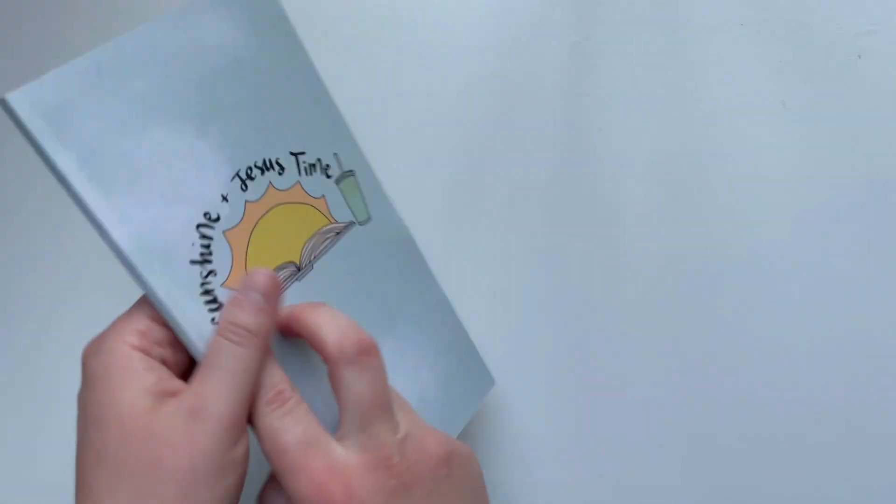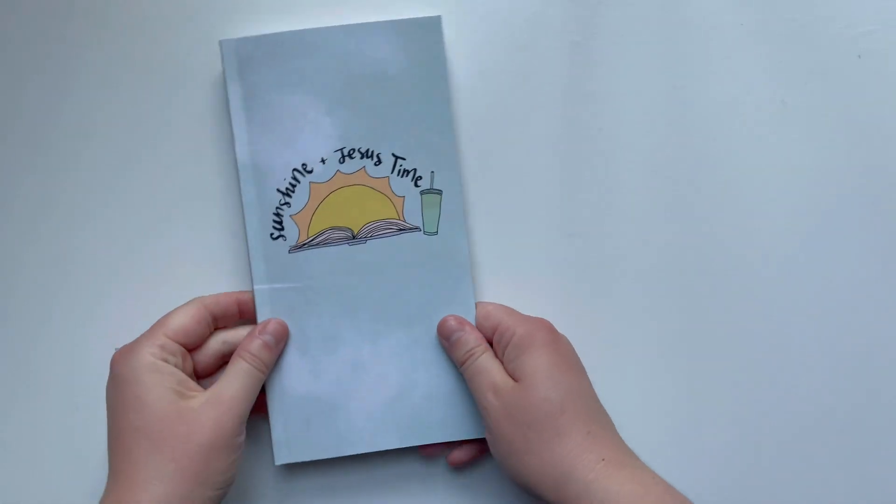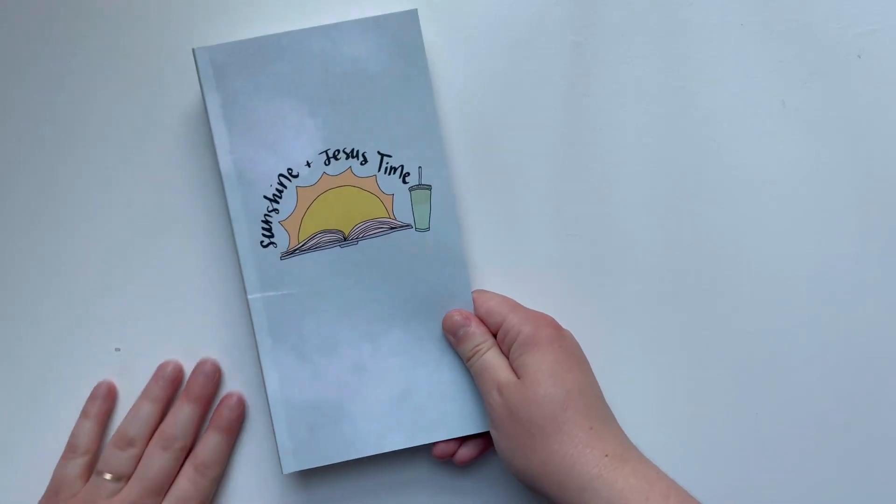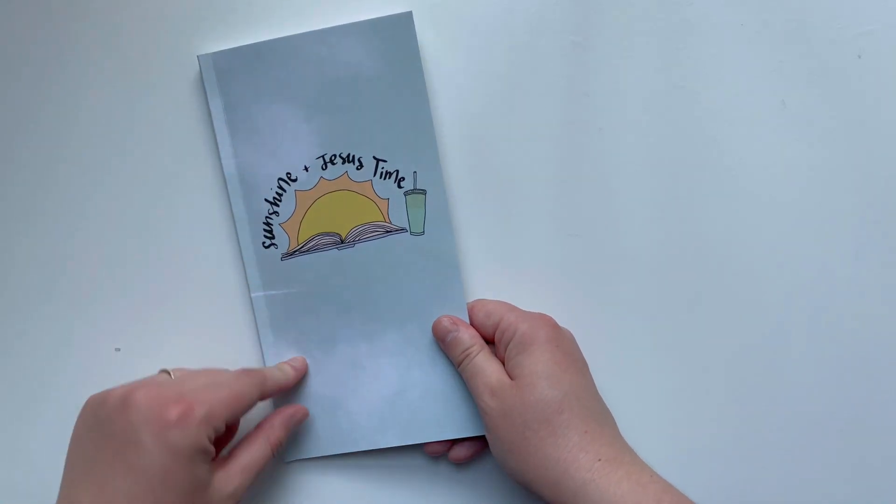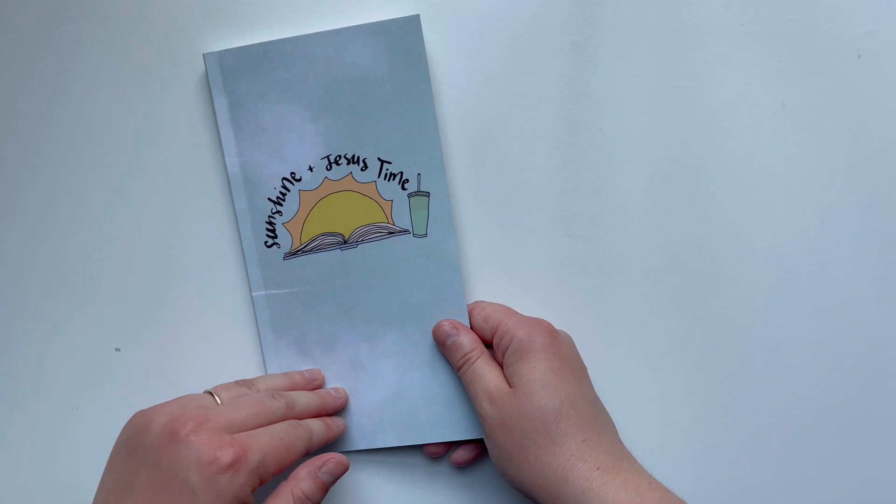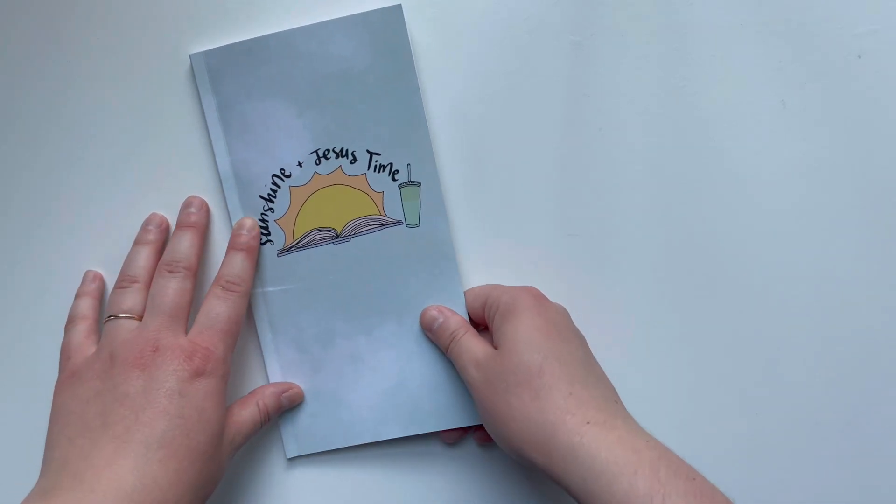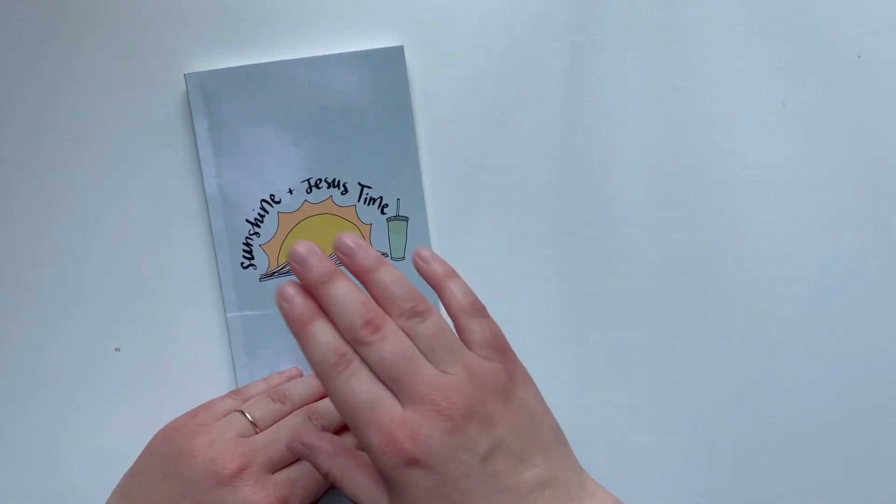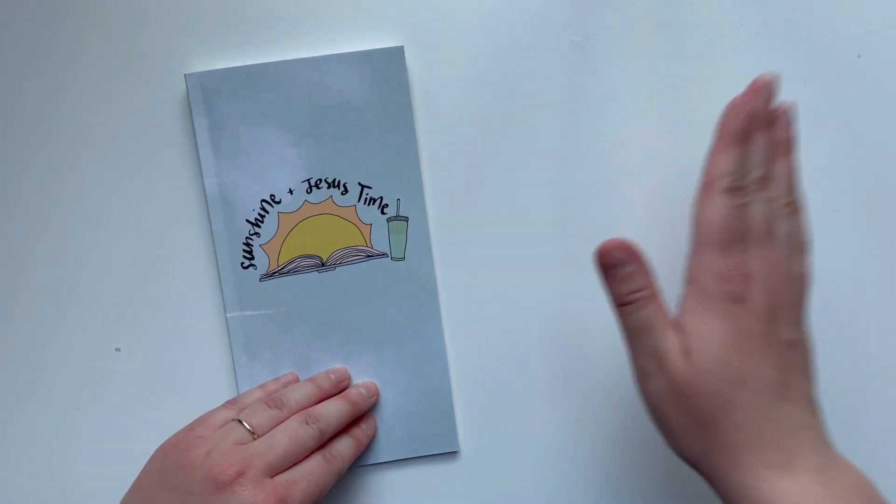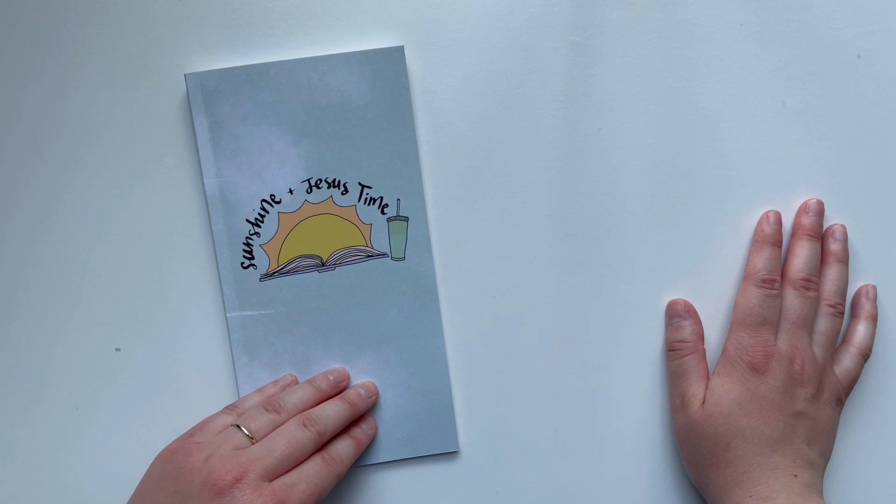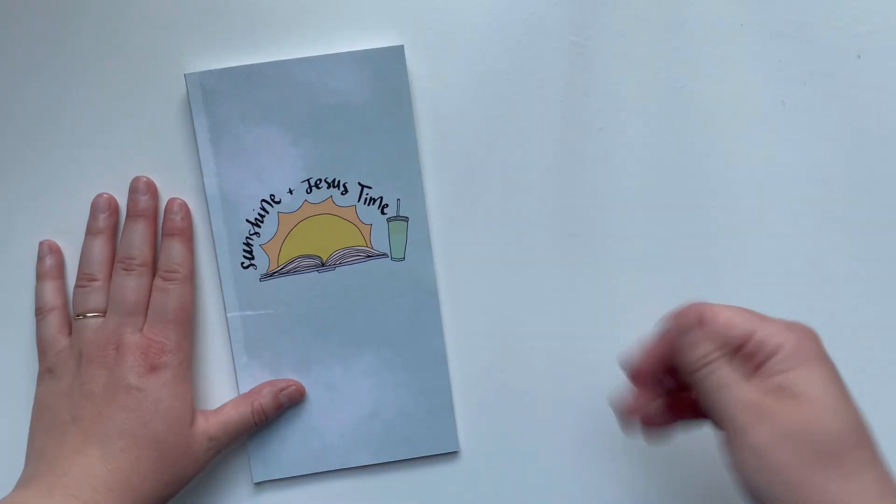And that is a flip-through of the Sunshine and Jesus Time devotion book. I hope you will join us. Be sure to pick up a kit in my Etsy shop or check it out on Amazon, and be sure to spend time in the sun with the Son this summer.